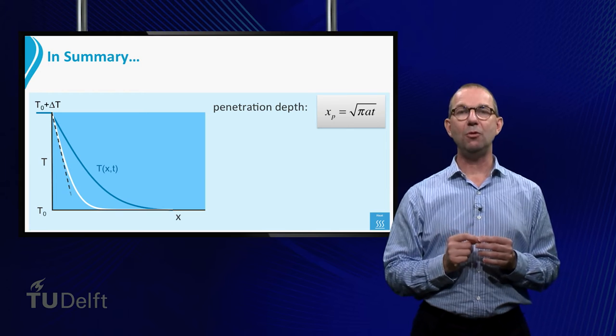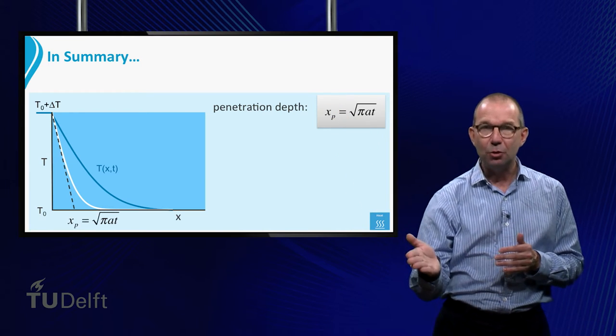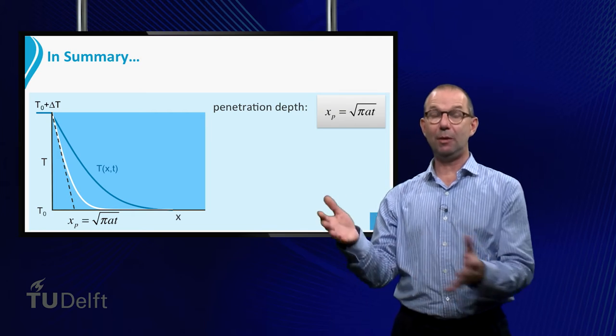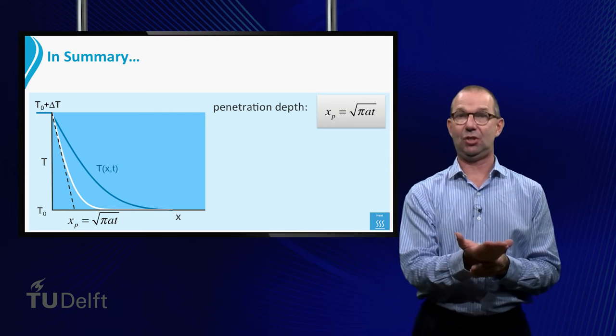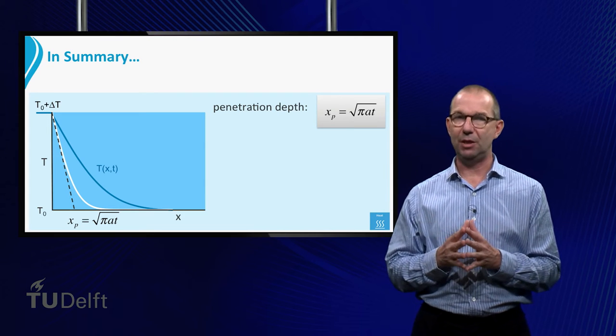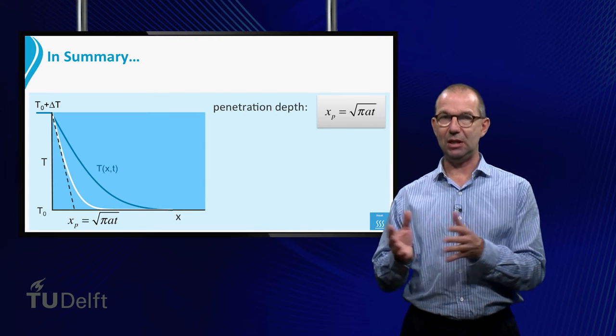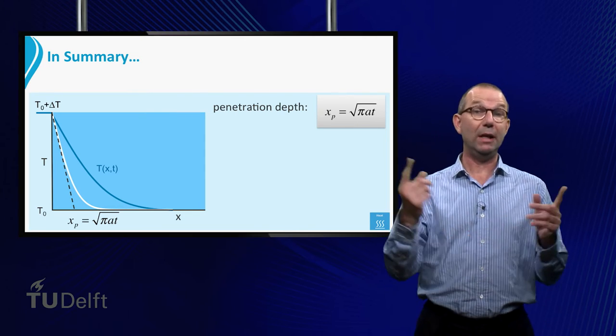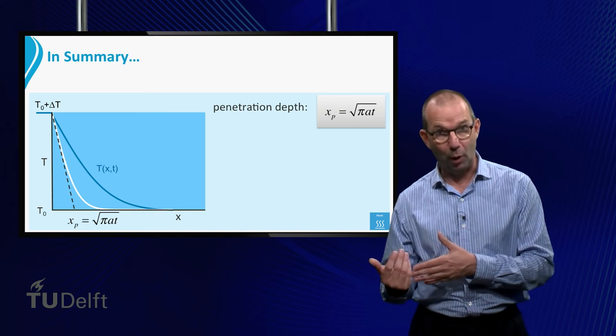Mathematically, it is found by taking the tangent to the temperature profile at the left hand side and seeing where it cuts the x-axis, as is shown on the sheet. Also from the penetration depth we see that the heating process slows down. The penetration depth moves inward not linear with time, but via its square root.